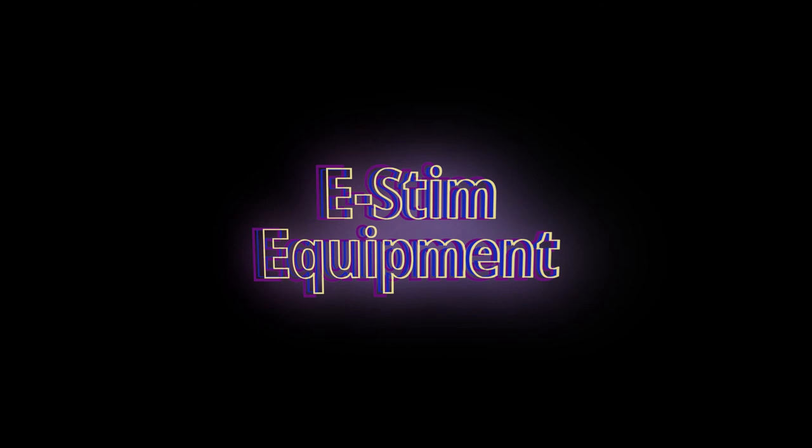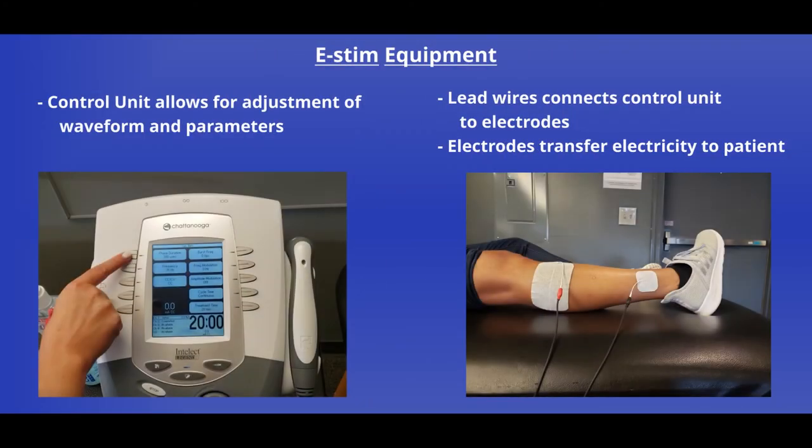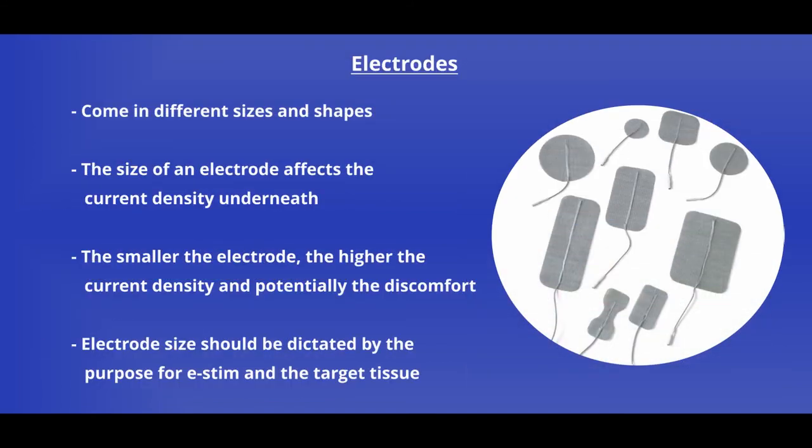Lastly in our introduction, let's talk about the equipment used to deliver electrical stimulation. Our e-stim unit consists of a control unit, lead wires, and electrodes. The control unit allows us to adjust all of the parameters we've previously discussed to ensure that we're meeting our clinical goals. The electrical current gets to our patient through the application of electrodes. There's a size and shape for almost any application required.